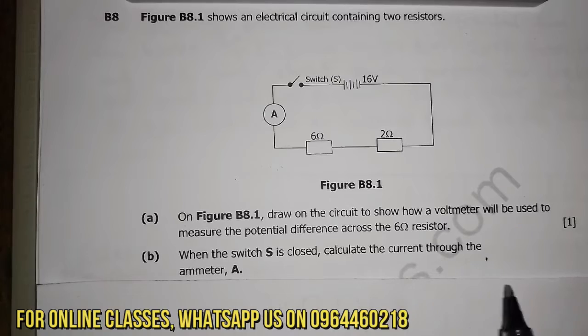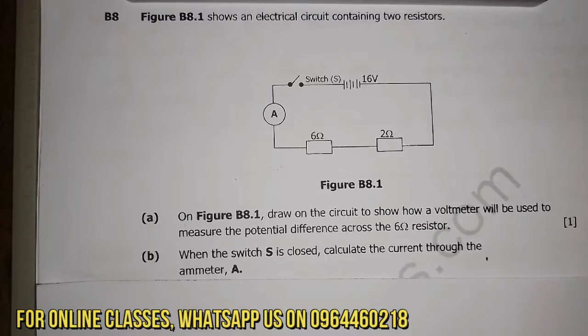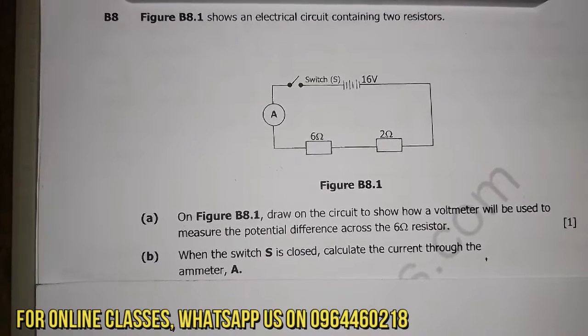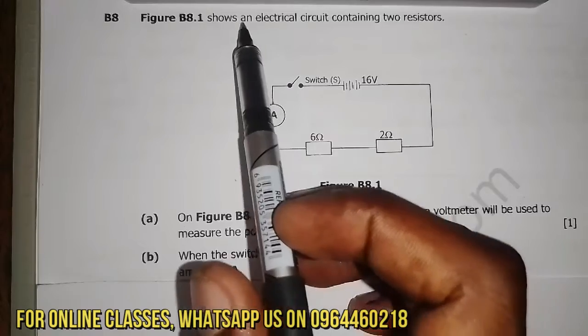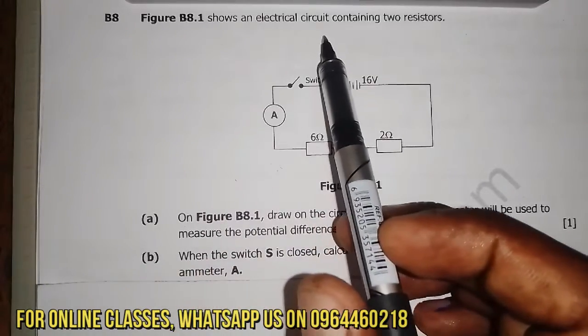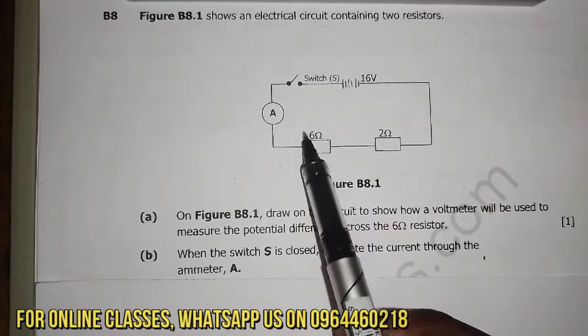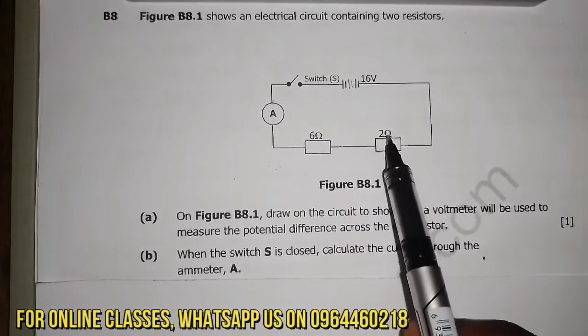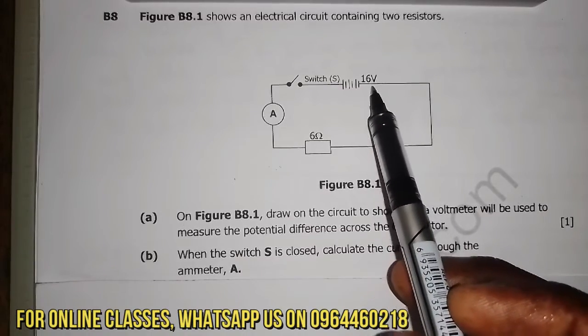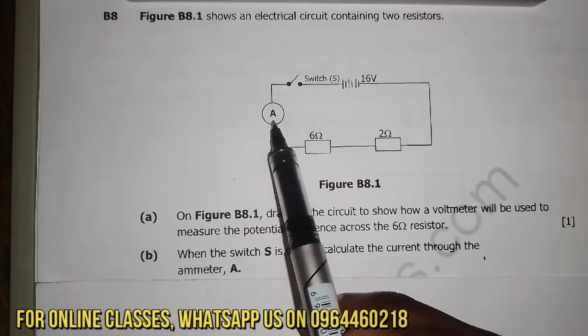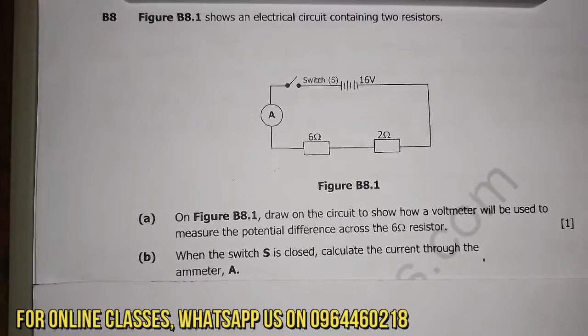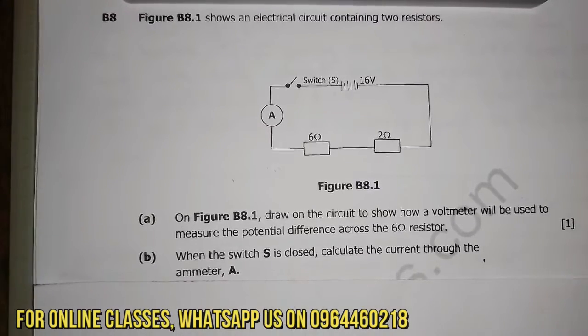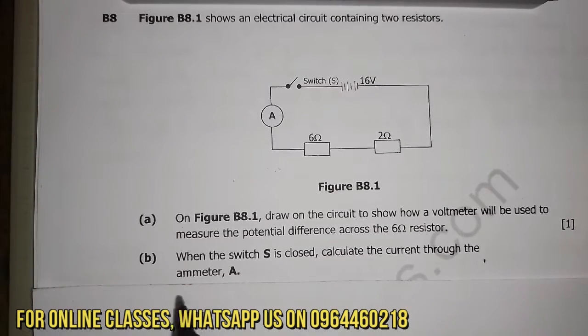So this topic is called electricity and you know that electricity, some of the concepts that you need to understand is how the circuit is connected. Is it parallel or series? So the statement is saying, figure B8.1 shows an electrical circuit containing two resistors. So we have resistor 1, resistor 2, and then we have this is a battery, a source of energy, 16 volts, and this is an ammeter, meaning measuring the amount of current that is passing through.